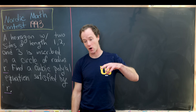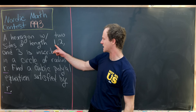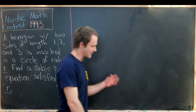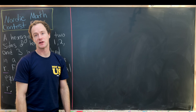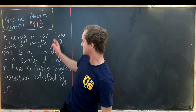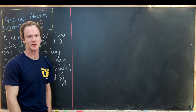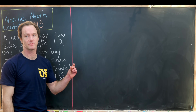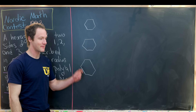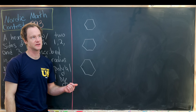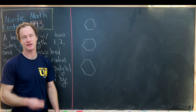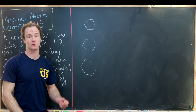Before diving all the way into this problem, I want to notice that given the two side lengths one, two, and three, there are only so many possible configurations of this hexagon. In order to figure out all the different configurations, let's get a couple of hexagons on the board. I think all we'll really need is three cases, up to symmetries of rotations and reflections.